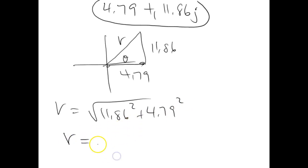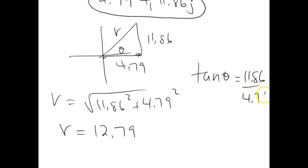To find the angle, I go tan theta opposite over adjacent, and theta gives me 68.01 degrees. So in polar form, our answer is going to be 12.79, 68.01 degrees.